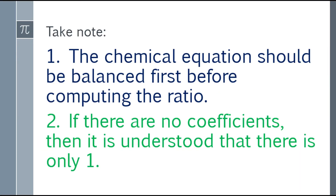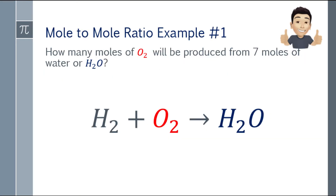Take note: the chemical equation should be balanced first before computing the ratio. Second, if there are no coefficients shown, then the coefficient is understood to be 1.